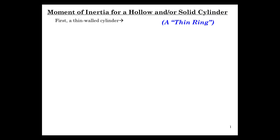Let's consider first a thin-walled cylinder. We start with a thin ring. A thin ring. So here's a ring. It's thin in that the thickness of the ring itself is negligible, so the mass all exists from the point of rotation, which is at the geometric center here. The mass is at radius r, all of it.